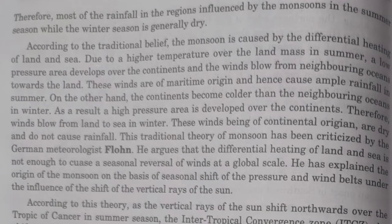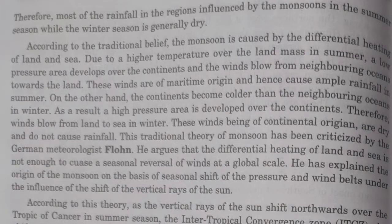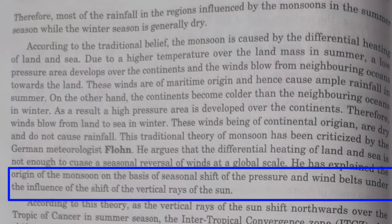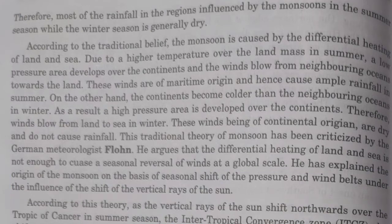This theory alone was not enough to prove the origin of monsoon at a global scale. So German meteorologist Flohn came up with another theory, claiming that the origin of monsoon is due to the seasonal shift of the pressure belts and wind belts, which is under the influence of the shift of the vertical rays of the sun — that is, the apparent movement of the sun.